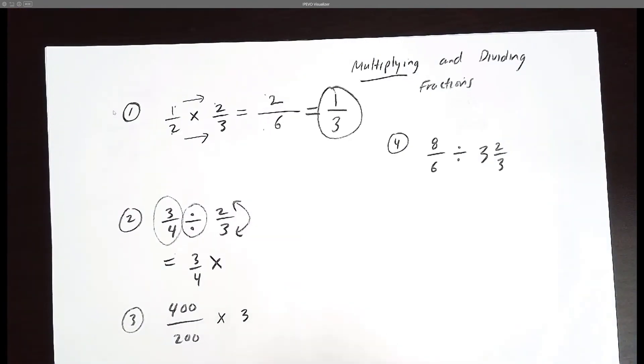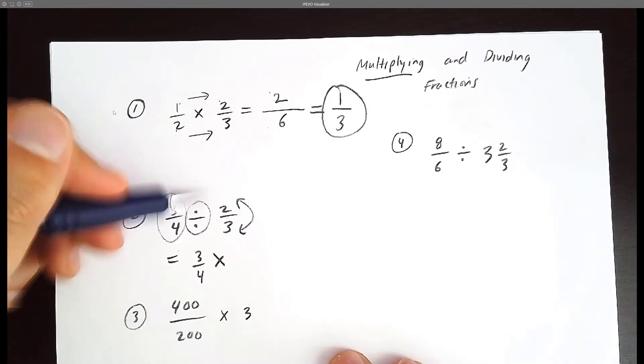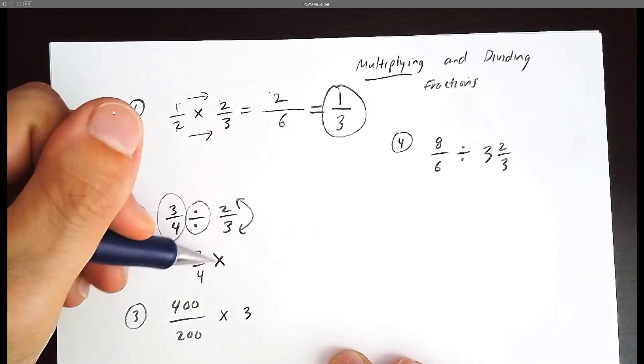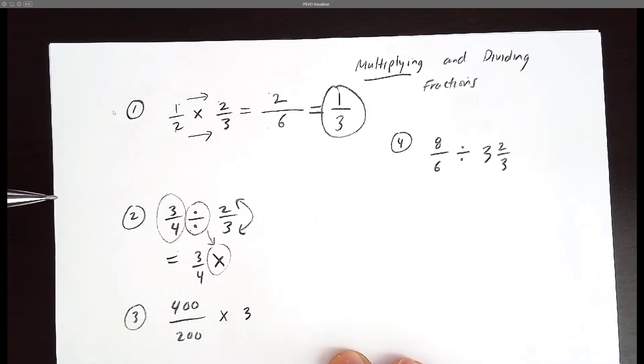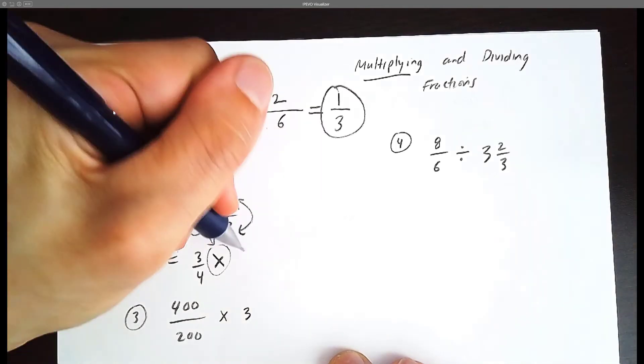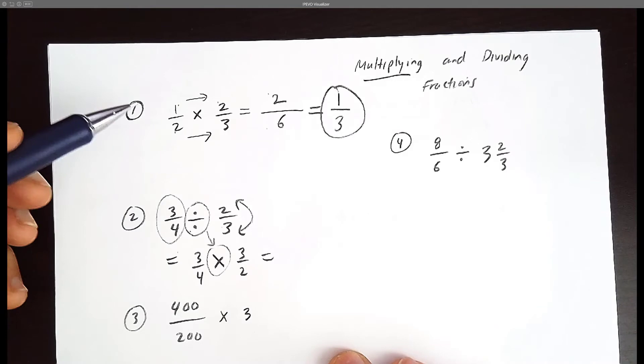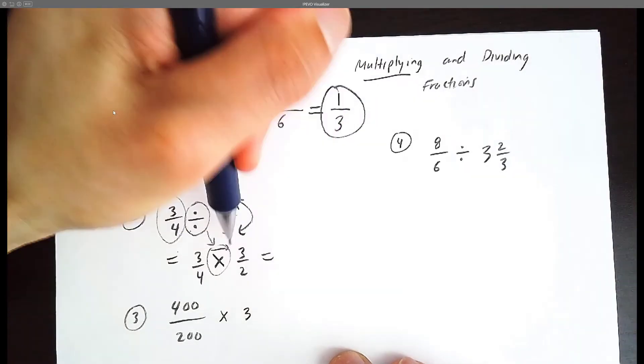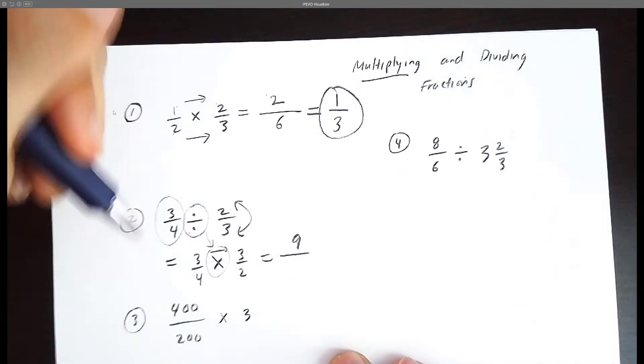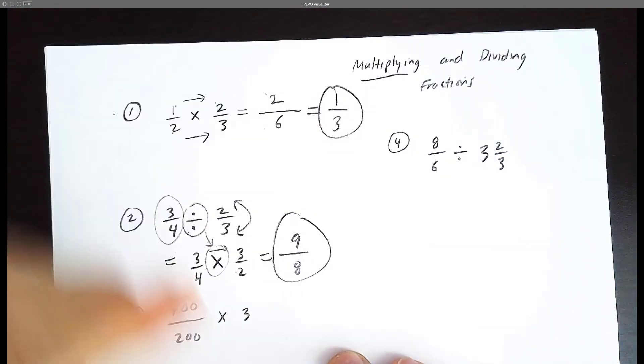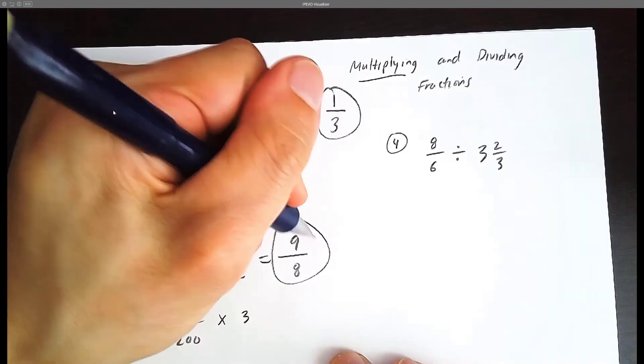So the rule says when you flip the right fraction, you can change the division to a multiplication symbol. So 2/3 now becomes 3/2. And now we have the same question as number 1. You multiply across. 3 times 3 is 9, and 4 times 2 is 8. This final answer we can't simplify, so we're done.